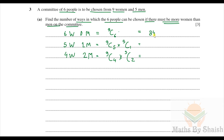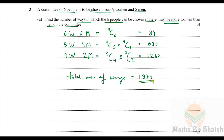Continuing: ⁹C₅ × ⁵C₁ = 126 × 5 = 630, and ⁹C₄ × ⁵C₂ = 126 × 10 = 1260. Adding all three cases: 84 + 630 + 1260 = 1974. So the total number of ways is 1974.